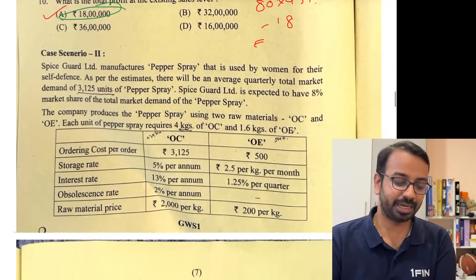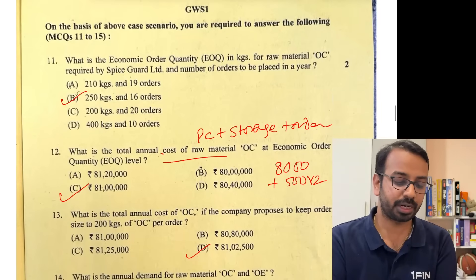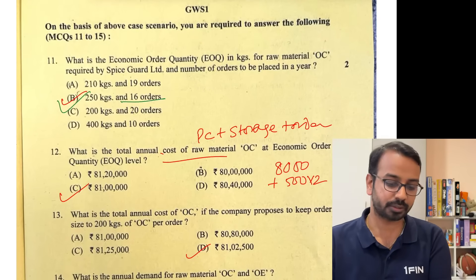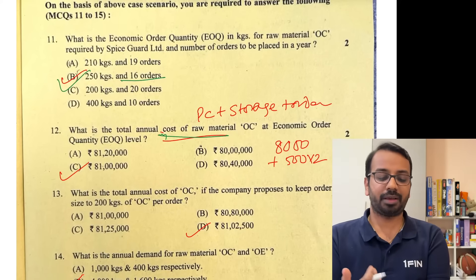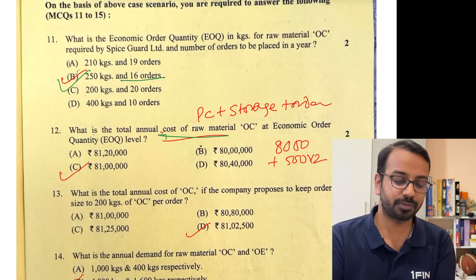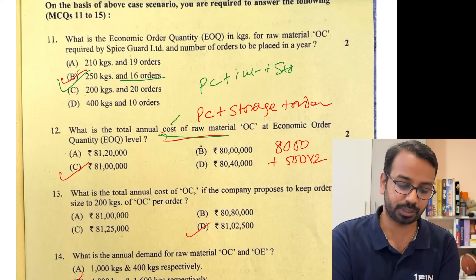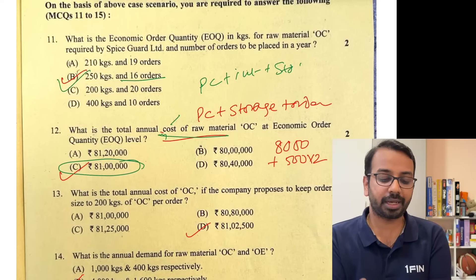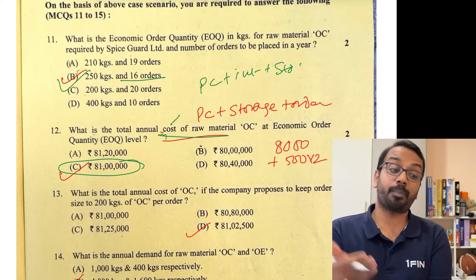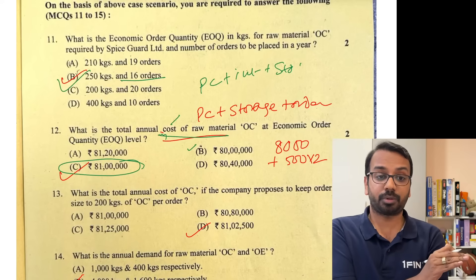The next case scenario was on calculation of Economic Order Quantity. The first answer is 250 with 16 orders. For annual cost, my assumption is: annual cost equals purchase cost plus interest cost plus storage cost. Doing that, I got 81 lakhs. If you only take purchase cost it is 80, but here we are taking all costs.